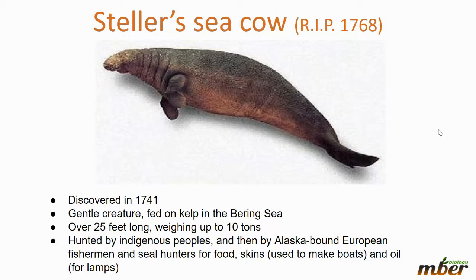The Steller's Sea Cow went extinct in 1768. It was discovered in 1741, meaning it went extinct almost 50 years after we discovered it. It was a gentle creature that fed on kelp in the Bering Sea, over 25 feet long and weighing up to 10 tons — that's about five people lined up head to toe. It was hunted by indigenous peoples and Alaska-bound European sailors and seal hunters for food, and its skins were used to make boats and oil for lamps.